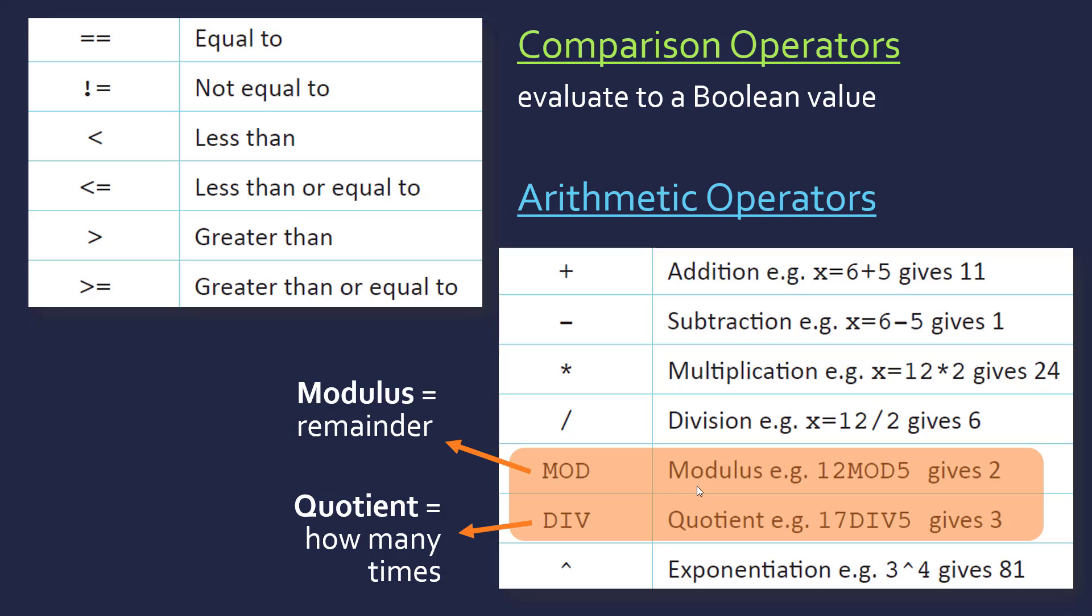So the modulus gives you the remainder, so 12 divided by 5, 5 goes into 12, 2 times, remainder 2. So the modulus operation, the modulus operator, something that's shown with a percent sign, will give you the remainder, which is 2.